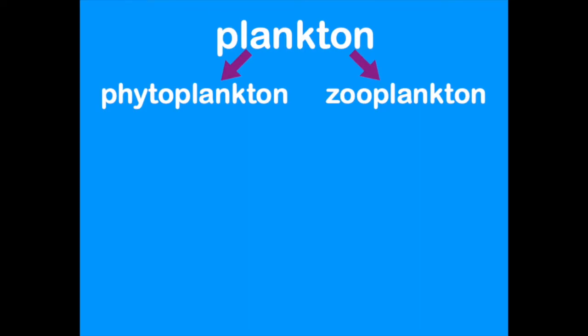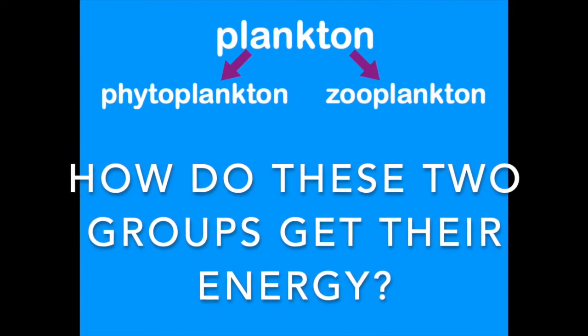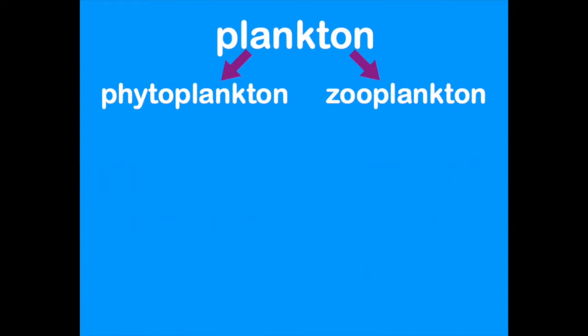How do you think these two groups might get their energy? The two main ways that living things get their energy is by either making their own or consuming it. Phytoplankton use sunlight to make their own energy, similar to plants. They aren't truly plants, but they are plant-like. To remember this, just think: phyto equals photosynthesis.